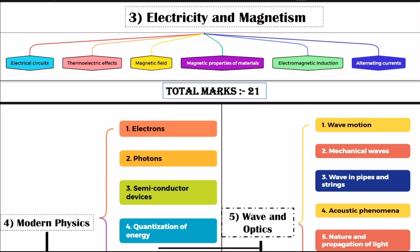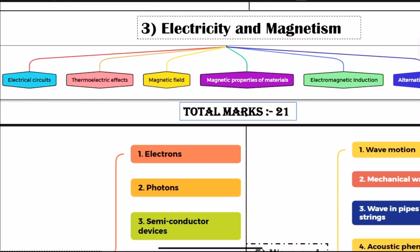Now Electricity and Magnetism. This chapter covers the electrical circuit, meter bridge, thermoelectric effect and its applications in thermocouples.